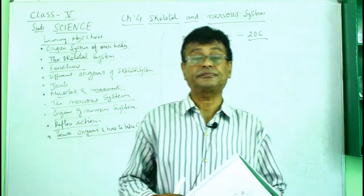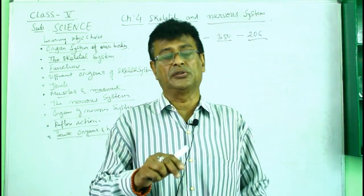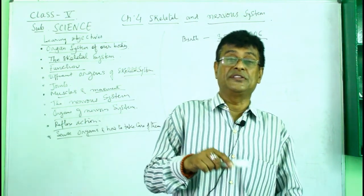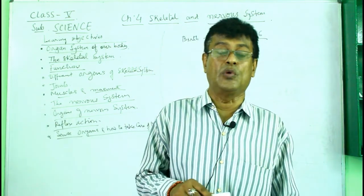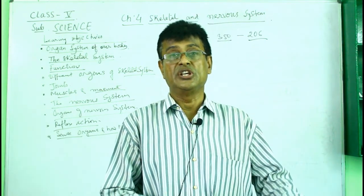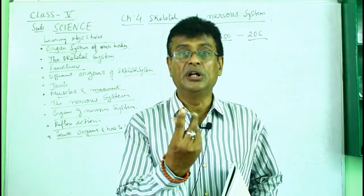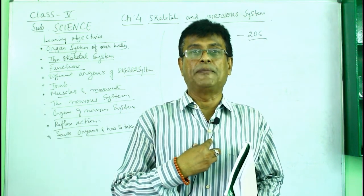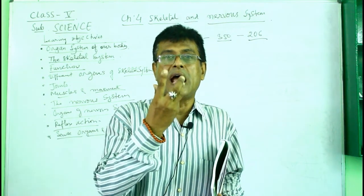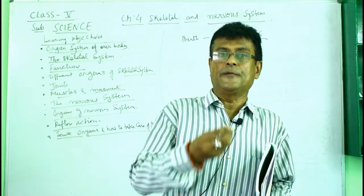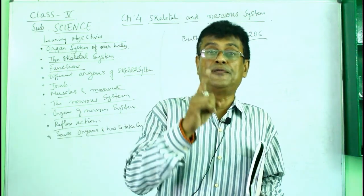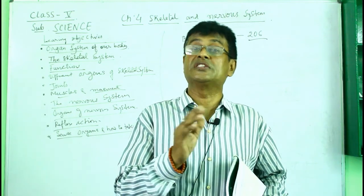We have the digestive system. Each and every organism on the surface of the earth, whether tiny or huge, needs food, because from food they get nutrition. They have to digest the food because the human body is not capable of taking complete food directly into the cells. The food is first simplified, and the system of simplification of food is nothing but digestion.